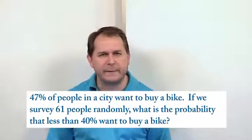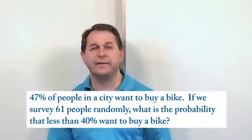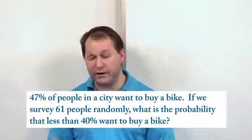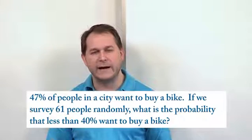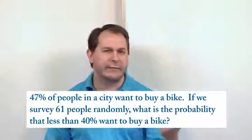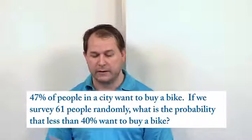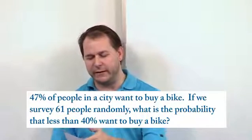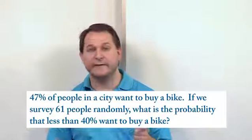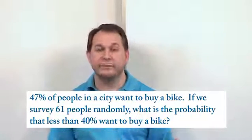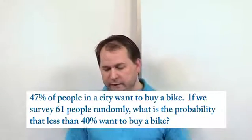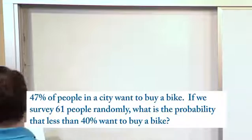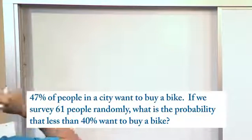So now we want to know: if I go survey people at random — in this case I'm surveying 61 people — what is the probability that less than 40% of those people want to buy a bike? So we have information about the population proportion, 47%, and information about the sample proportion that we care about, which is 40%, regarding the sample size of 61. Let's put this information on the board and get some practice with it.